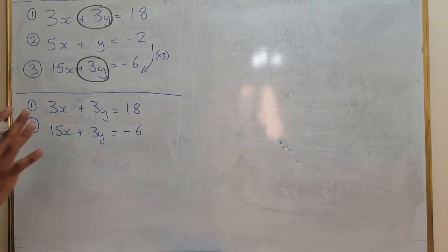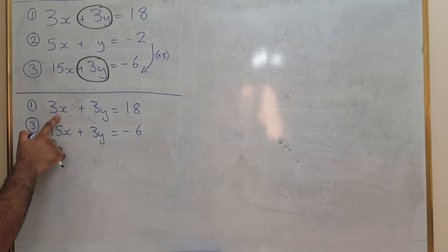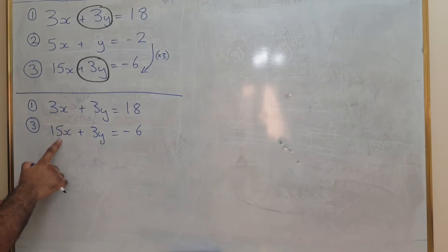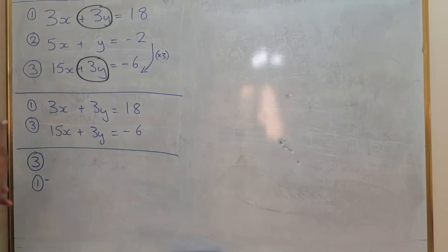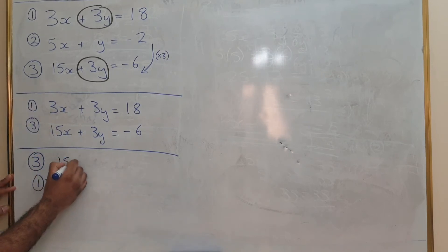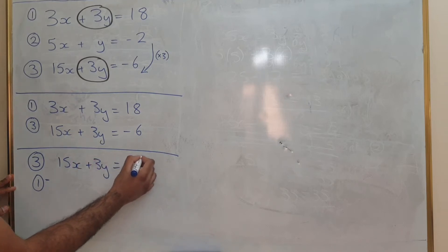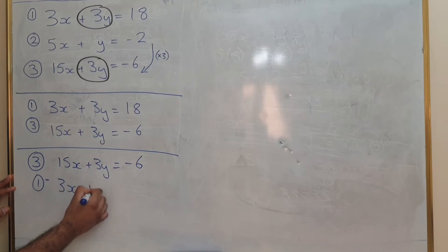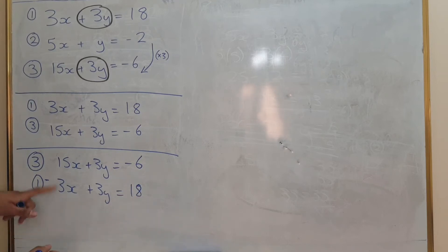Now we have a slight issue here. For x in the first one it's smaller than the coefficient for x in the second one. I'm going to switch these two around. So it's going to be 15x plus 3y equals minus 6 minus 3x plus 3y equals 18. This is going to make it easier so I don't have to get a negative amount of x's.